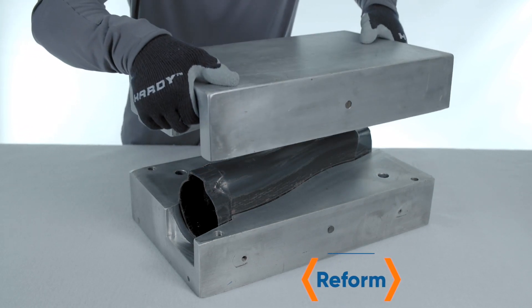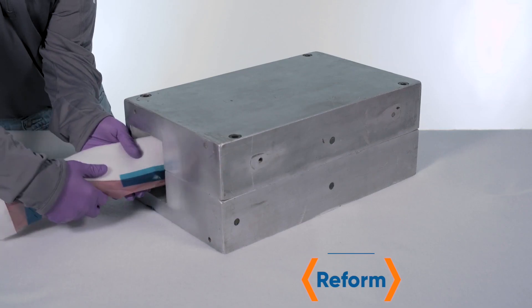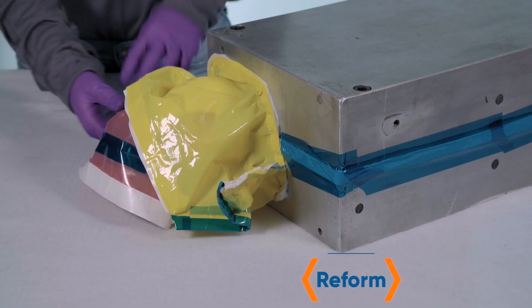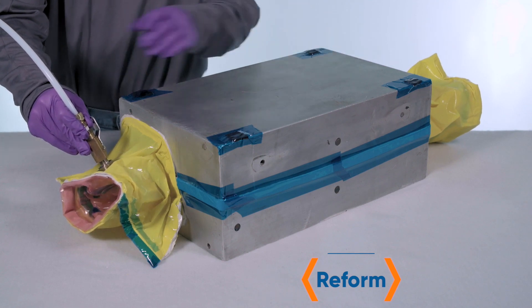To reform, the elastic Smart Tool is placed into a preheated reforming mold. A vacuum bag is pulled through the Smart Tool and sealed to the mold. Vacuum is pulled and it is left to cool.